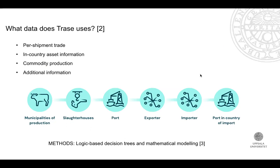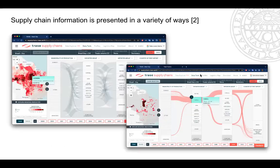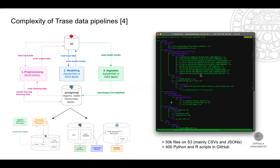It uses a logic-based decision tree and mathematical modeling common for all commodities. Based on the models, they present results in different ways — for example, Sankey flowcharts showing how different points in the chains are linked together. You can also download the data and have data aggregations on the website.